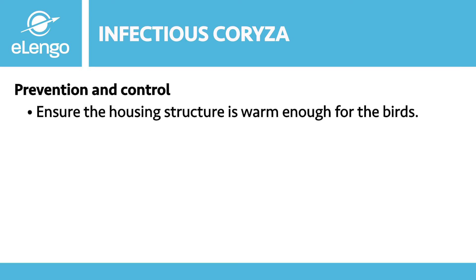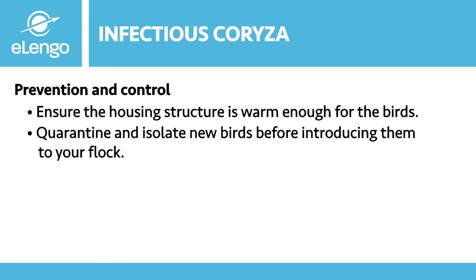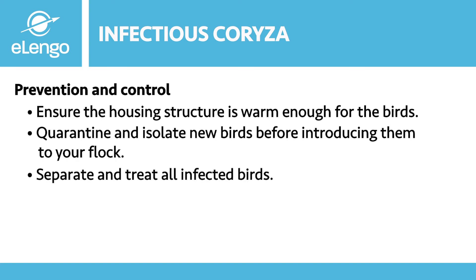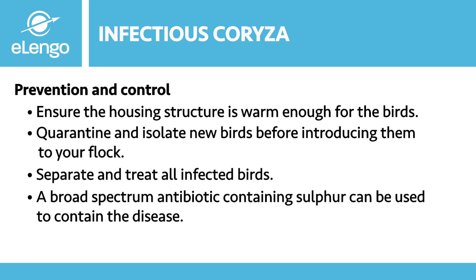How do we prevent and treat infectious coryza? Prevention is the most effective method of control. Provide a warm house to help keep the disease at lower pressure. Quarantine any new birds before adding them to your flock. Infected birds should be separated and treated. Since it is a bacterial infection, we are able to use a broad-spectrum antibiotic that contains sulfa to contain the disease.